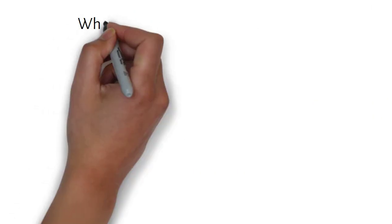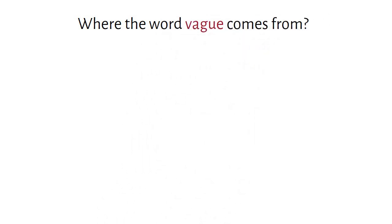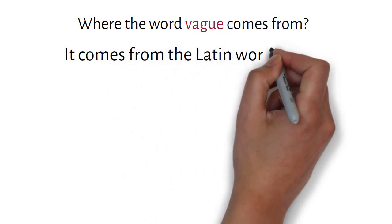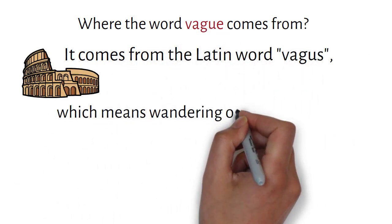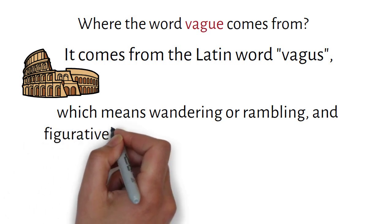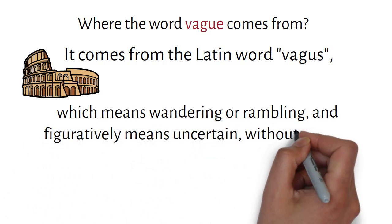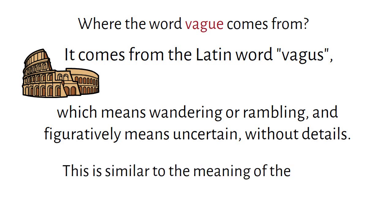Let's now have a look at where the word vague comes from. It comes from the Latin word vagus, which means wandering or rambling, and figuratively means uncertain without details. This is similar to the meaning of the word vague in English today.